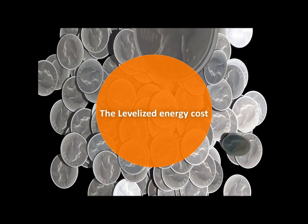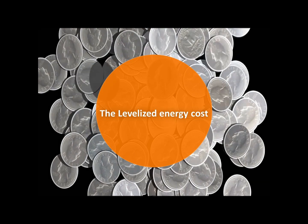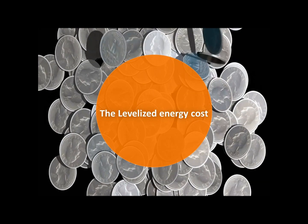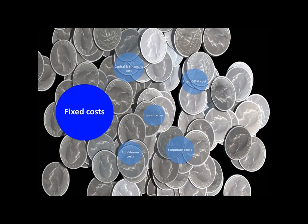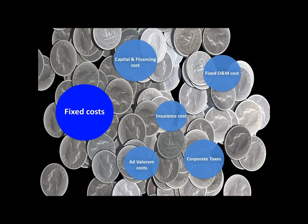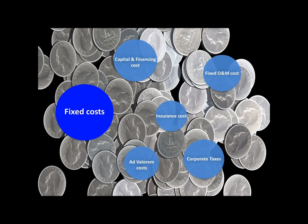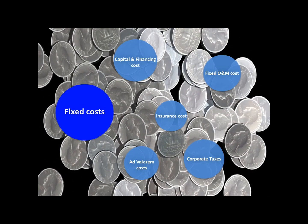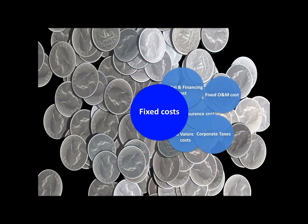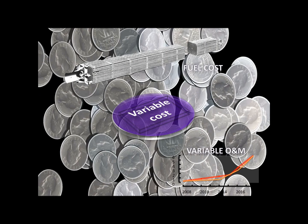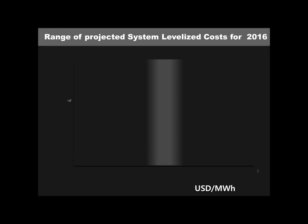The levelized cost of a resource represents a constant cost per unit of generation and is useful for comparing different sources of energy. It consists of fixed costs and variable costs. Fixed costs include capital and financing of construction, insurance, ad valorem, fixed operation and maintenance, and corporate taxes. Fixed O&M costs are staffing and other costs independent of operating hours. Variable costs are fuel costs and variable O&M, which is a function of operating hours.